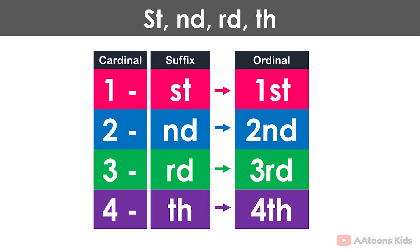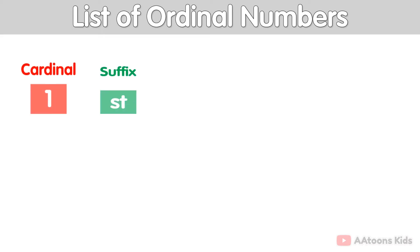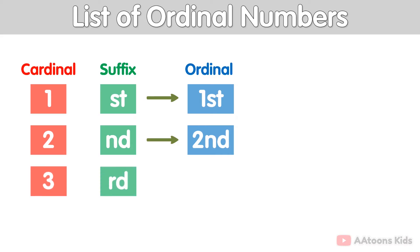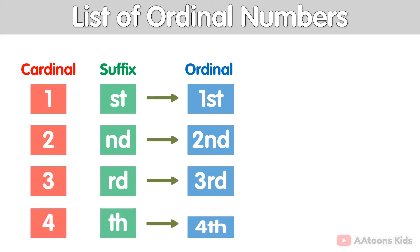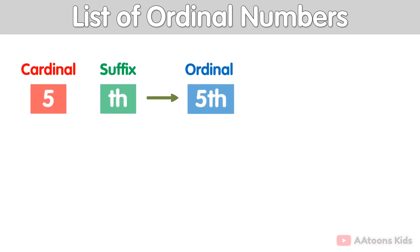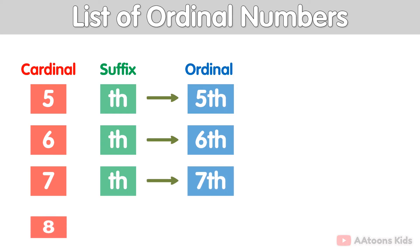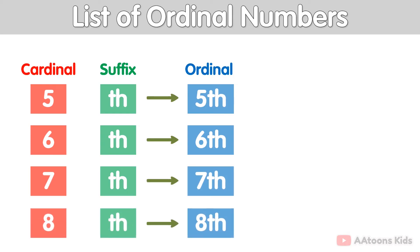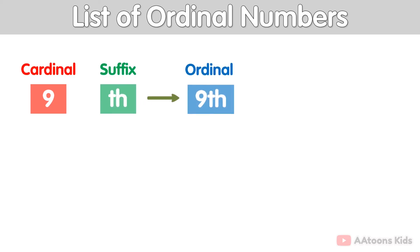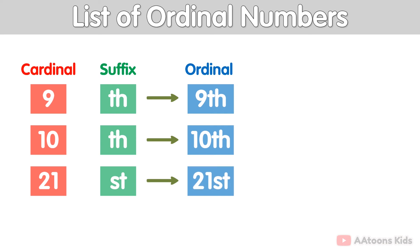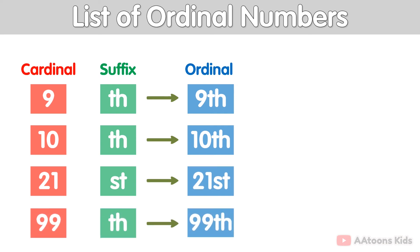In simple words, ordinal numbers represent the order, rank, or position of an object. List of ordinal numbers: 1st, 2nd, 3rd, 4th, 5th, 6th, 7th, 8th, 9th, 10th, 11th, 21st, 99th.